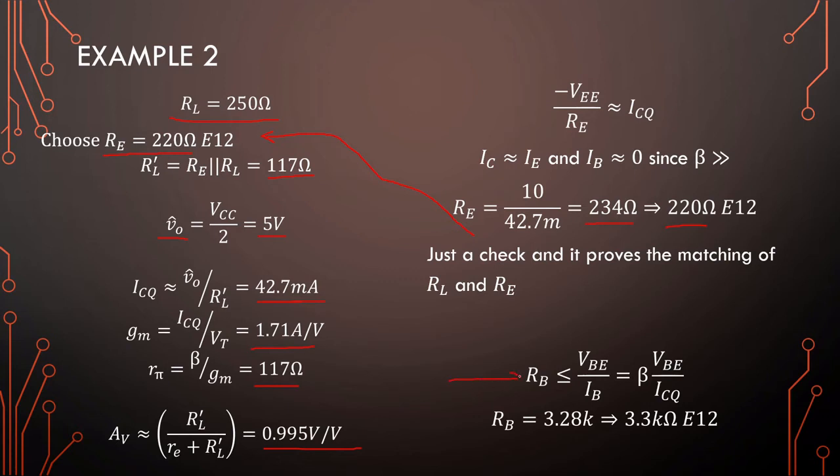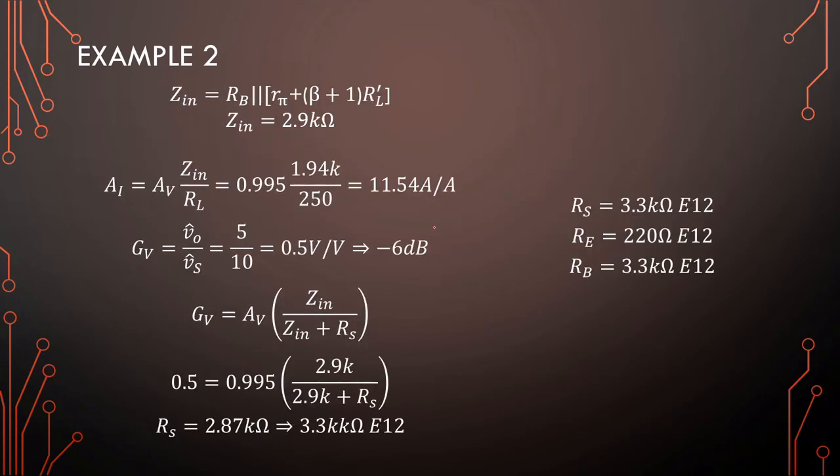Lastly we need to determine a value for RB. The maximum value of RB is about 3.3kΩ. We can pick anything less but 3.3k is fine. With that we calculate input impedance: 2.9kΩ. Current gain is 11.54 A/A. 5V divided by 10V is 0.5. Going through the motions, the source resistor we should insert should be larger than 2.87Ω - that's 3.3kΩ.